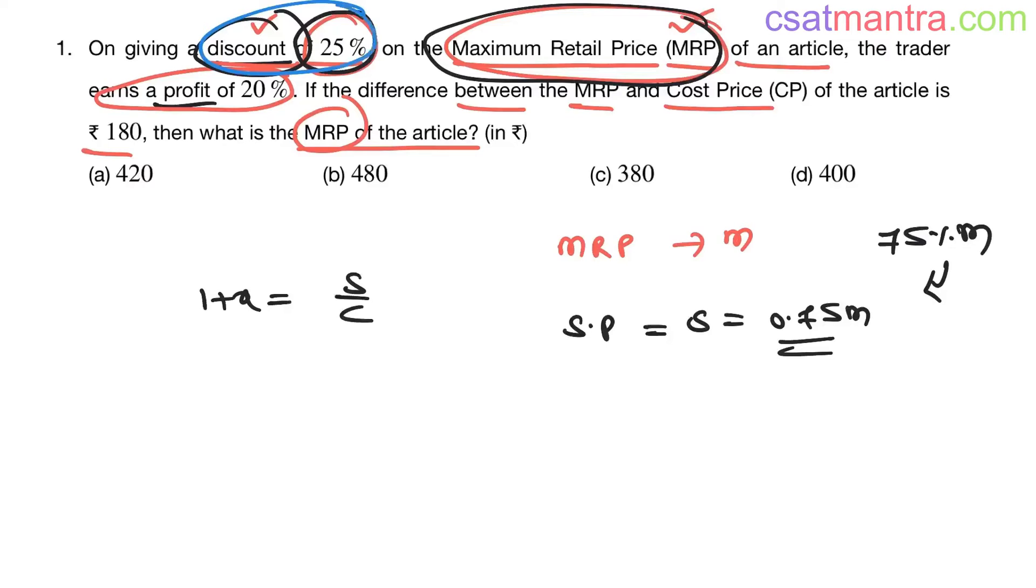Now after giving a discount of 25% on MRP, the trader earns a profit of 20%. So x is 20 by 100, that is 0.2. 1 + 0.2 because it is profit. If it is loss, it would be minus 0.2.